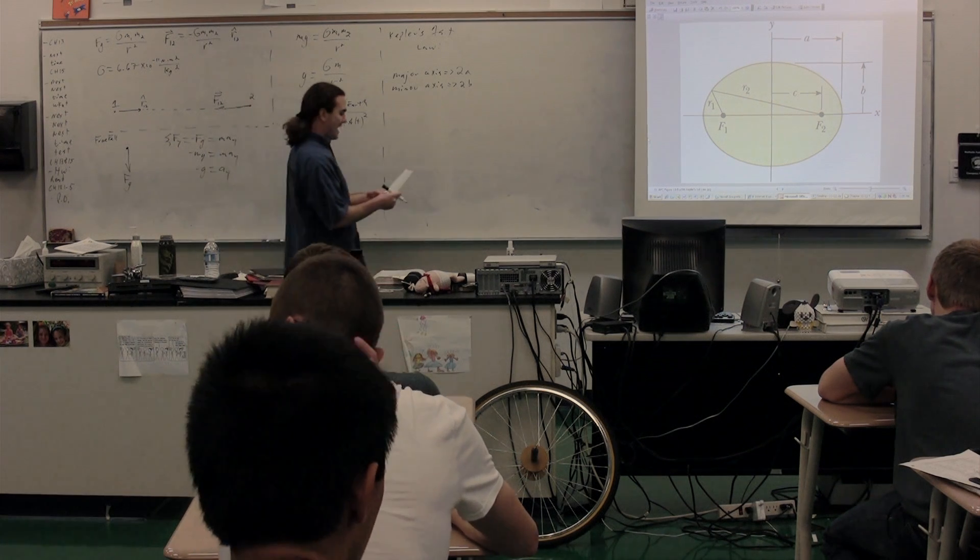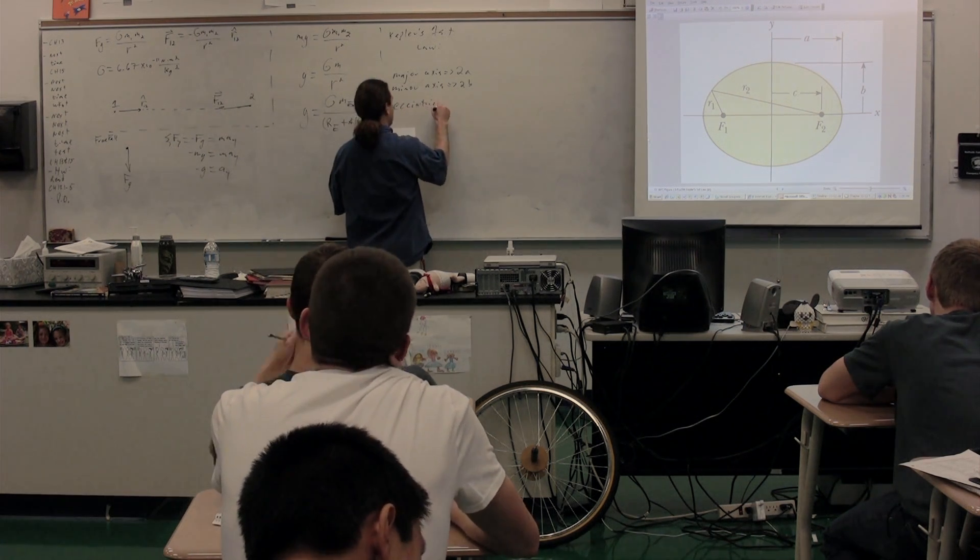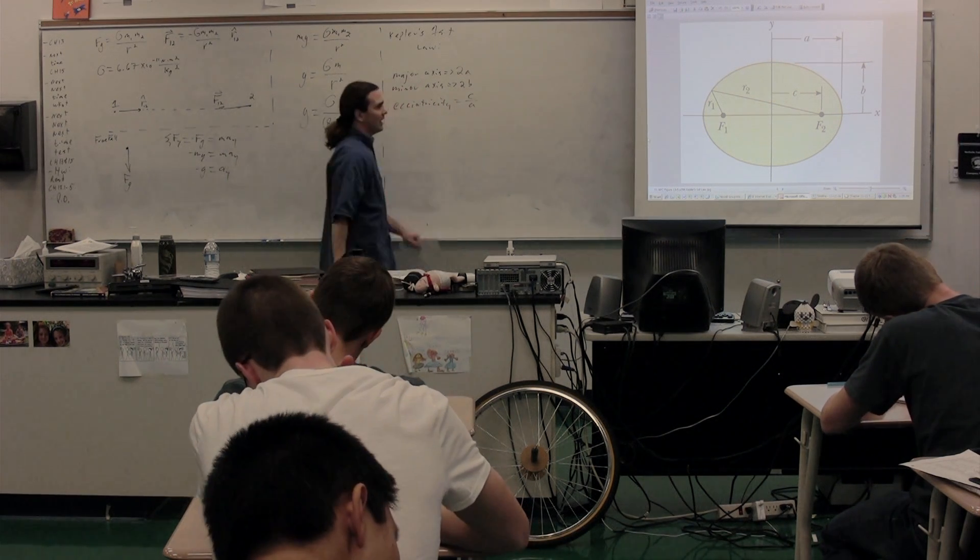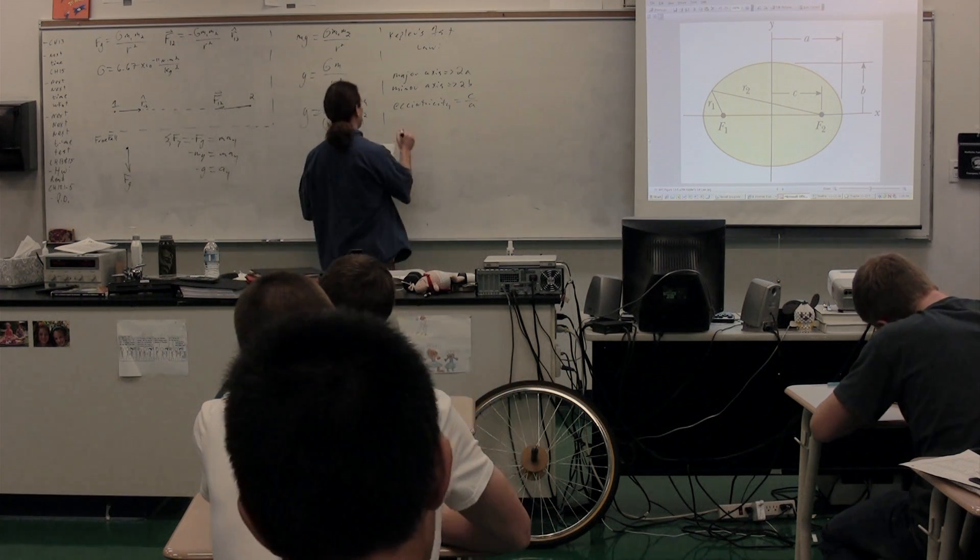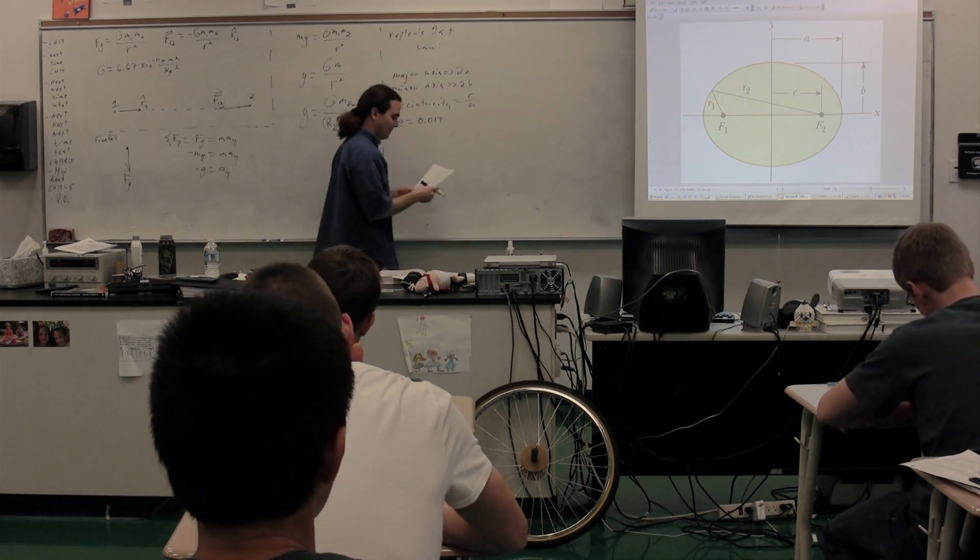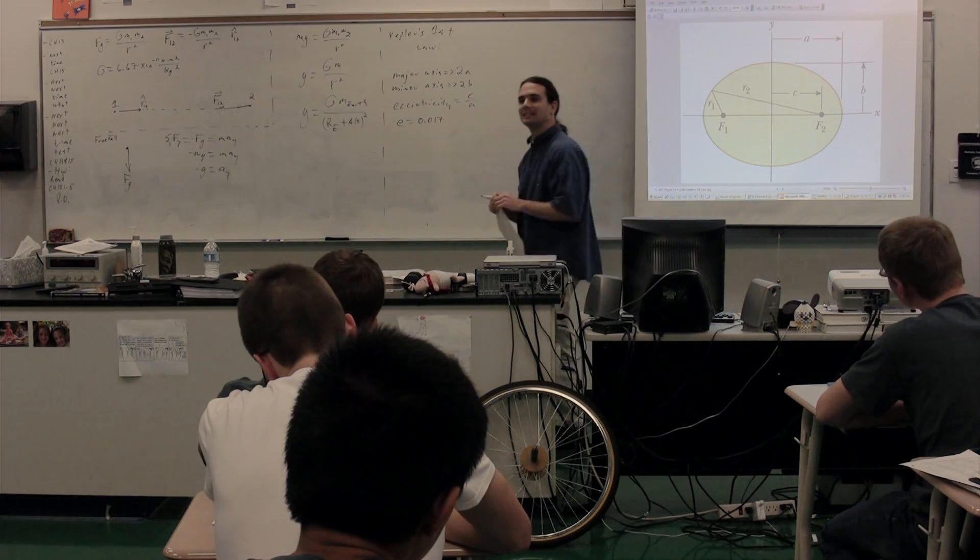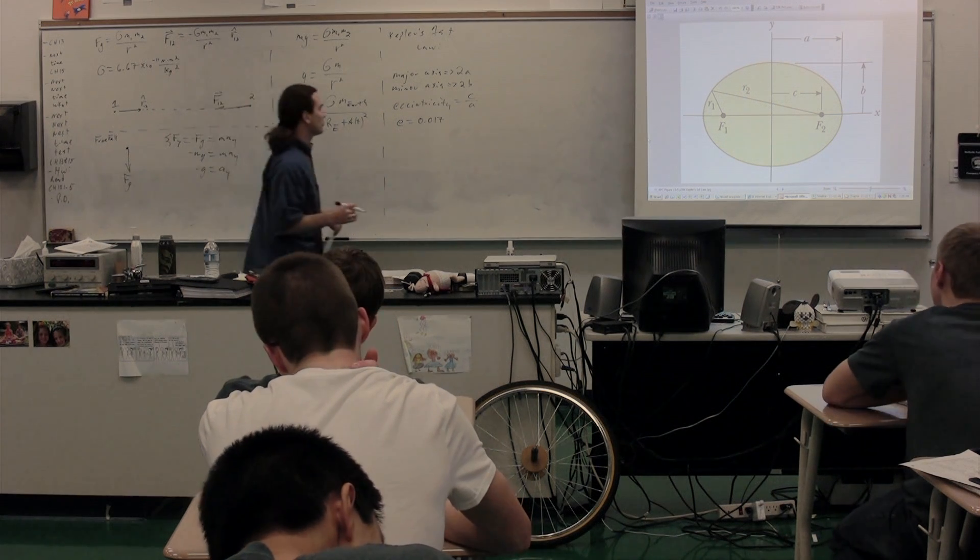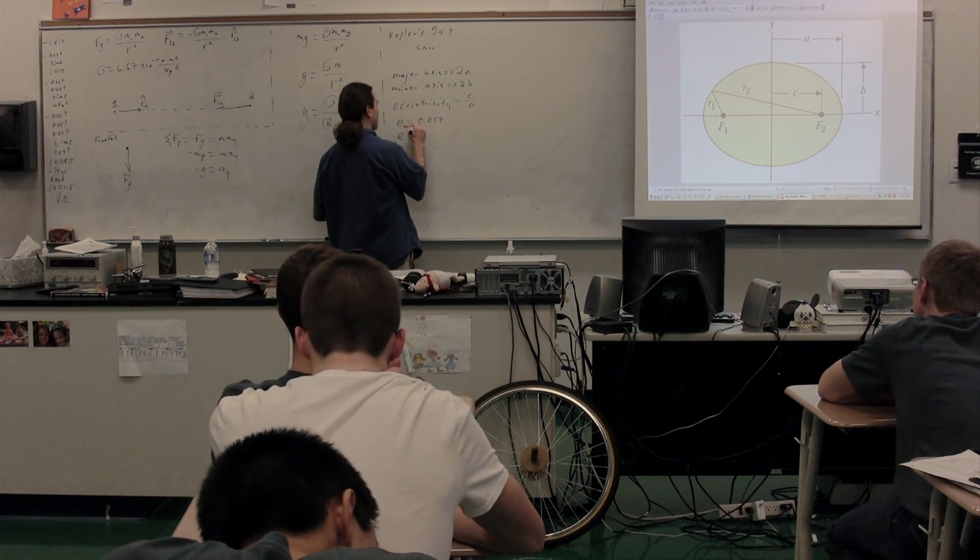The eccentricity is equal to C over A. Now, the eccentricity of the Earth is equal to 0.017, which makes it very close to what? A circle. It's very close to a circle. The eccentricity of the Earth is 0.017.